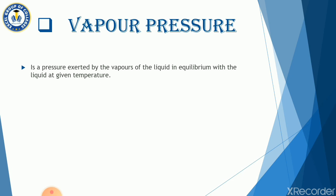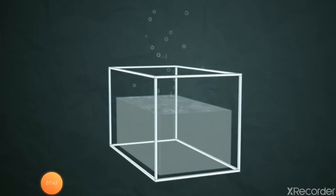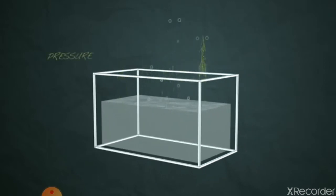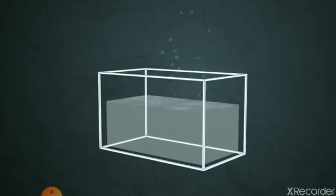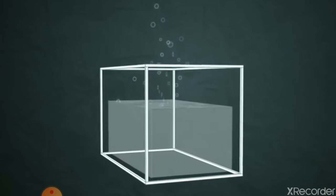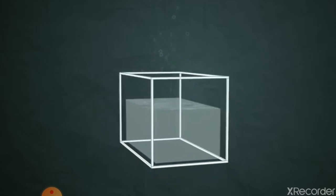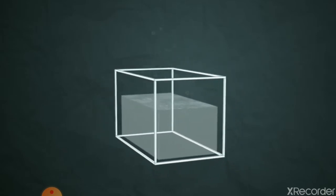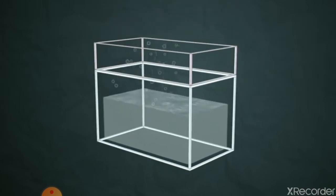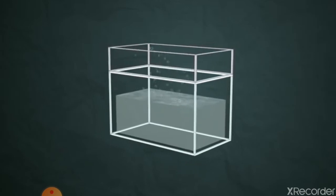For evaporation, the surface needs to be open, while for vapor pressure, the surface needs to be closed. Consider a container with some liquid — we supply heat and evaporation occurs with the surface open, and evaporation continues. If you close the surface, what happens is that the vapors going up cannot escape outside.